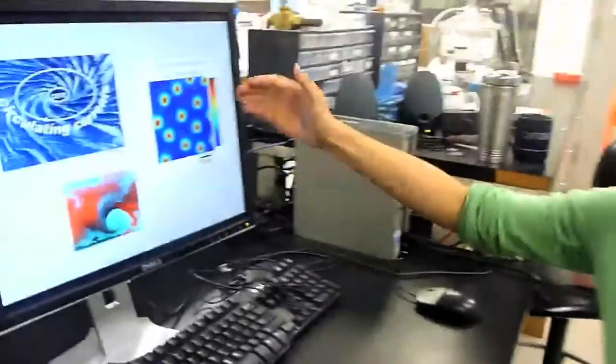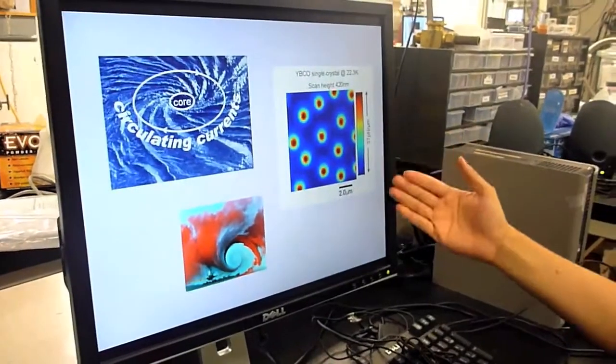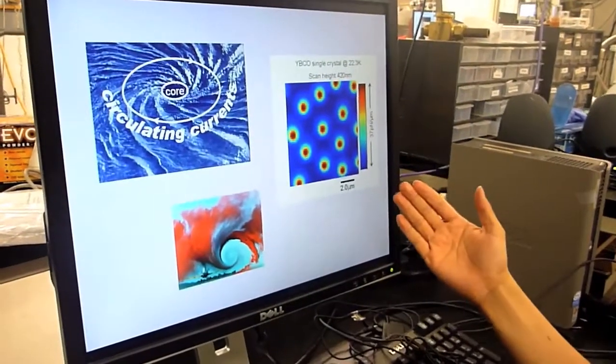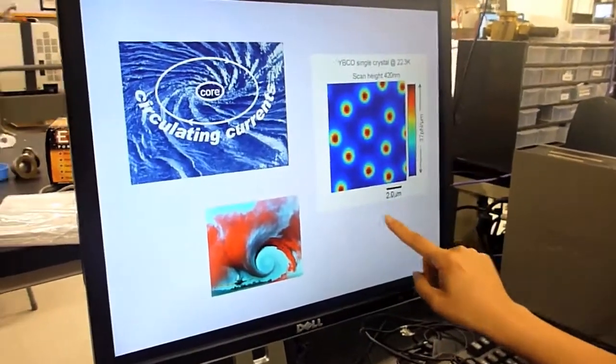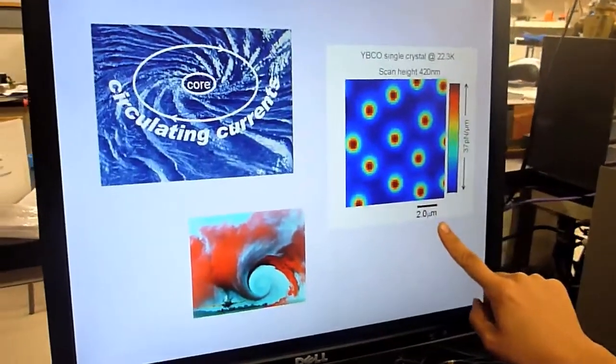Now I'm going to show you one example we study with this magnetic force microscopy. Here is what we call images of superconducting vortices on a very small scale. So you'll notice the scale here is 2 microns.